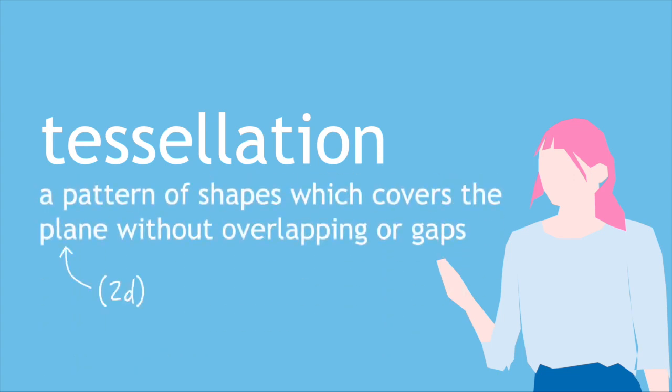So firstly, what is a tessellation? We say that a tessellation is a covering of the plane, so we're talking about two-dimensional designs here, without overlaps or gaps.